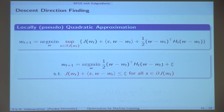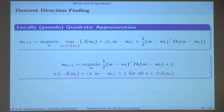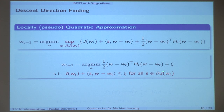The constraint must hold for all subgradients belonging to the set. If this set had infinite elements — for instance, if it were an interval — the constraint must hold for all values in the interval, meaning you have infinite constraints. So it seems like we are going down a hopeless path. But it turns out there is hope at the end of the tunnel.